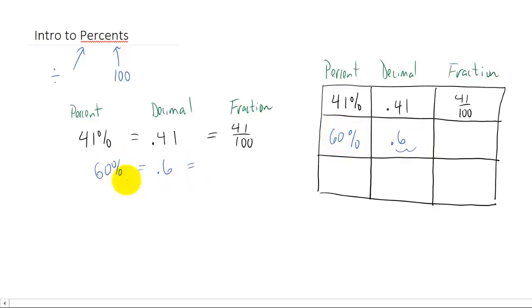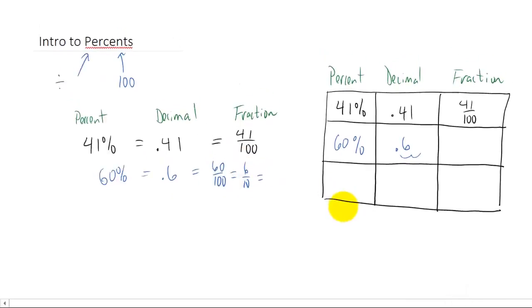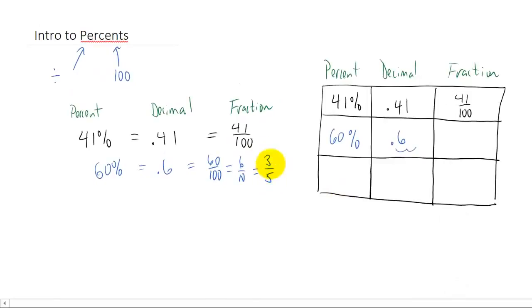Now if we want to write this 60% as a fraction, that's 60/100, which can actually be reduced. We can divide numerator and denominator by a factor of 10 to get 6/10, and then we can divide numerator and denominator by 2 to get 3/5. So we write the percent as a fraction over 100, and then we reduce to get 3/5.